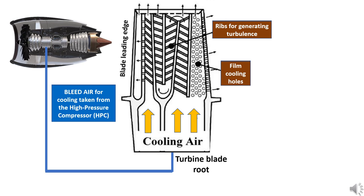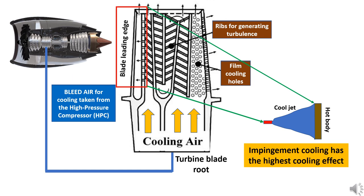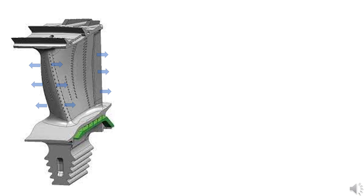As the leading edges are very hot, the impingement cooling method is used where the cooler air from the passages is passed through small internal holes which hit the internal walls of the turbine leading edge. This impingement method has the highest cooling effect, hence used specially for the leading edges.